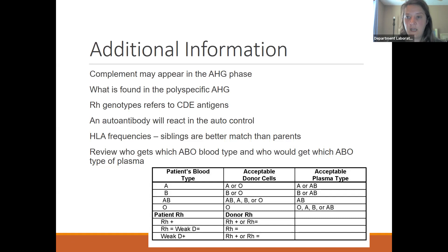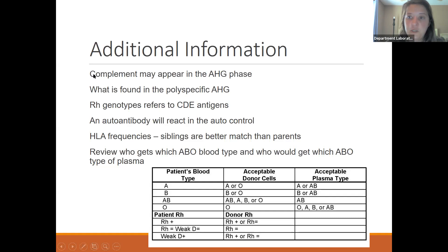Polyspecific AHG contains both anti-IgG and anti-C3b/C3d. Then you have your monospecific AHG, which are two different antisera: monospecific anti-IgG and monospecific anti-C3b/C3d. If you were doing your DAT testing, you would start with polyspecific. If you had a positive reaction with polyspecific, you would take that further and do monospecific IgG testing and monospecific C3b/C3d testing to determine exactly what is coating patient cells in vivo. Make sure you are familiar with your RH genotypes referring to the C, D, and E antigen using Fisher Race terminology and Wiener nomenclature as well.